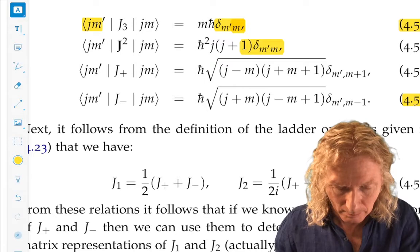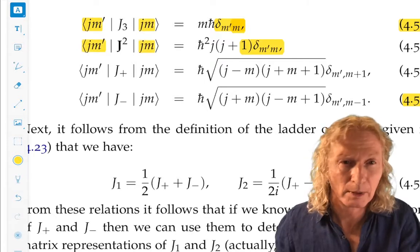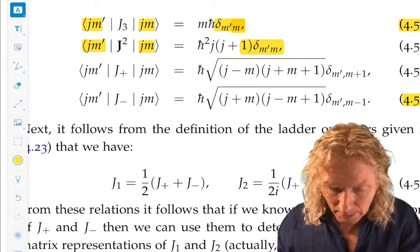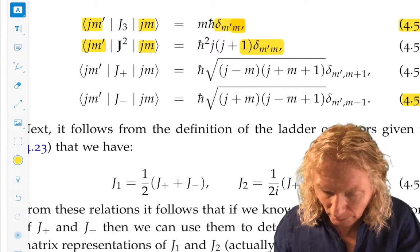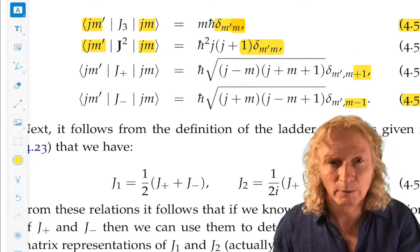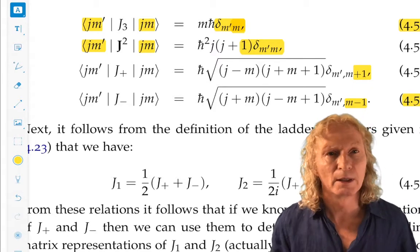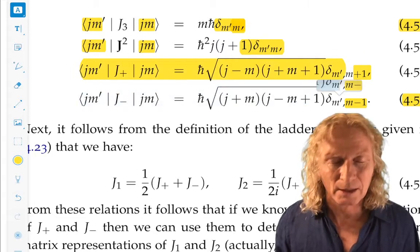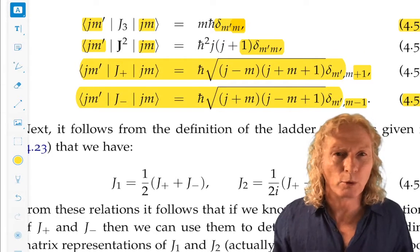Notice the m primes and ms, the bra and the ket. And jplus and jminus, well, we're going to have an m plus 1 and an m minus 1 involved, because they increase the value of m. Now you see where this phase convention in the previous section is important.